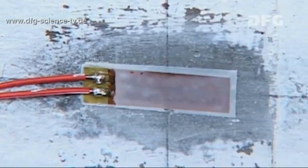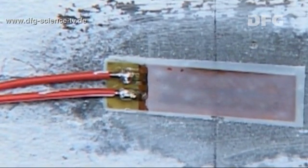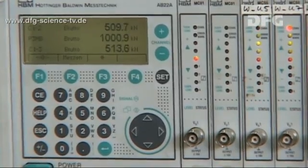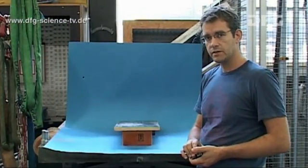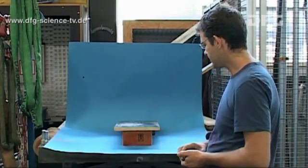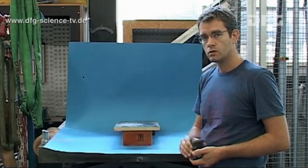The strain gauge is made of an electrically conductive material whose resistance changes measurably when it is extended. Since concrete is very stiff, the strain of the concrete when subjected to stress is very low.